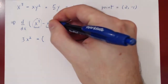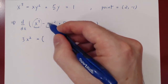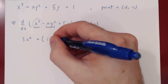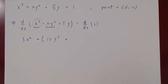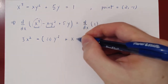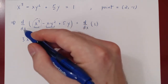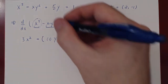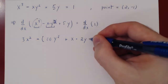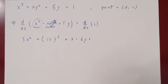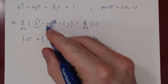The product rule says to differentiate the product of two functions: it is the derivative of the first function times the second, plus the first function times the derivative of the second. Differentiating x with respect to x gives 1, times y squared, plus x times the derivative of y squared with respect to x. Since y is a function of x, we use the chain rule: first differentiate the power of 2 to get 2y, then multiply by the derivative of y with respect to x, giving 2y times dy/dx.